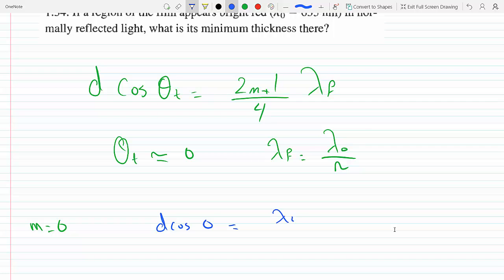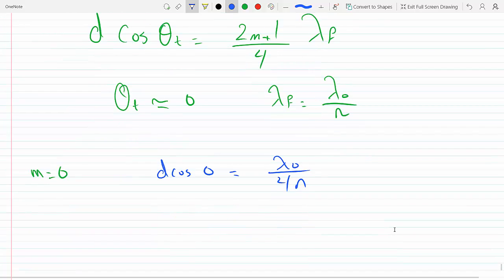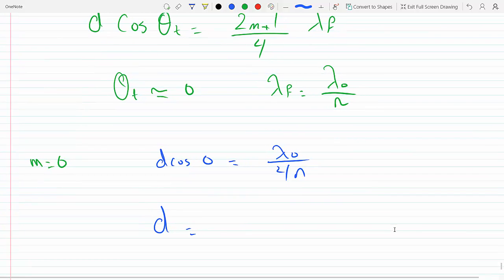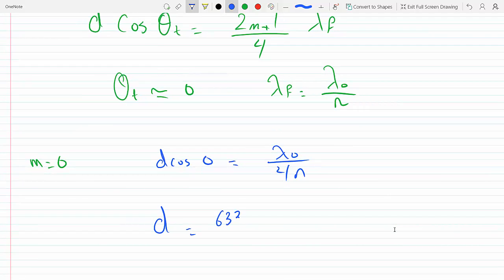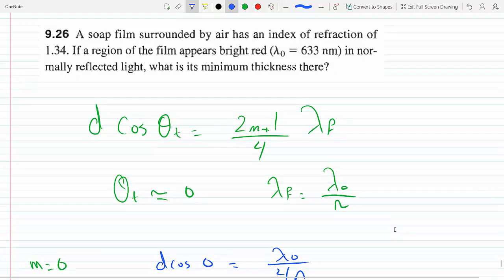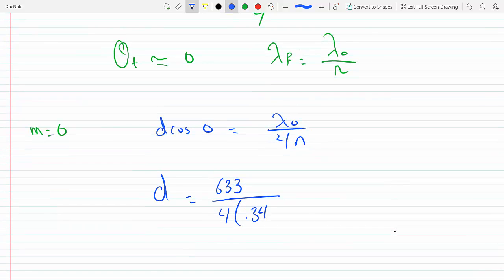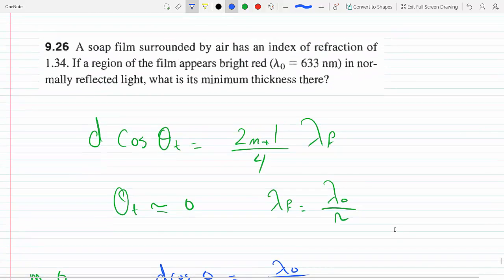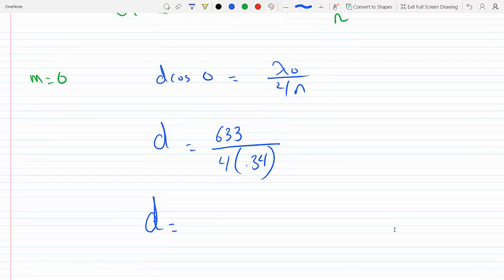Equals lambda 0 over 4n. Just plug in the numbers. So what's the wavelength? 633 nanometers divided by 4 times the index of refraction, which is 1.34. Plugging this on the calculator, you get...